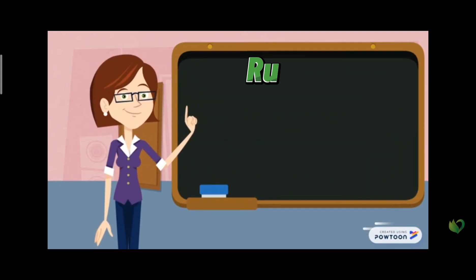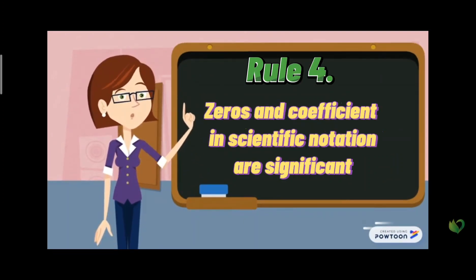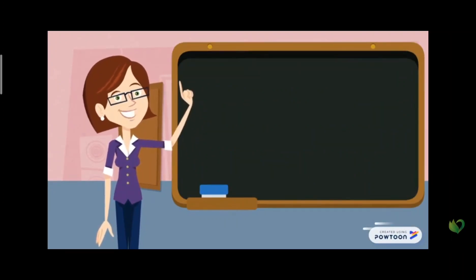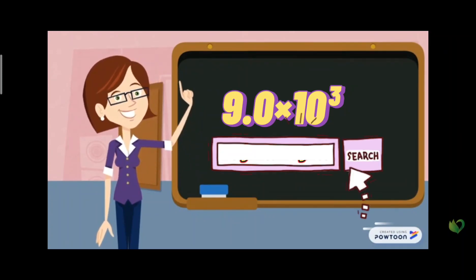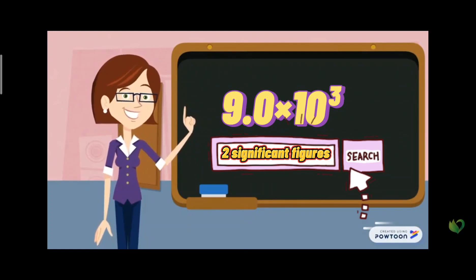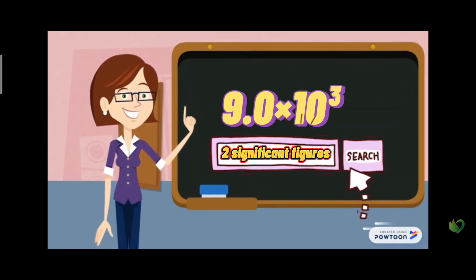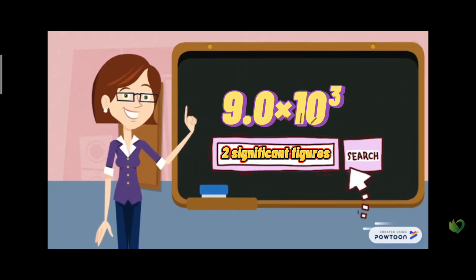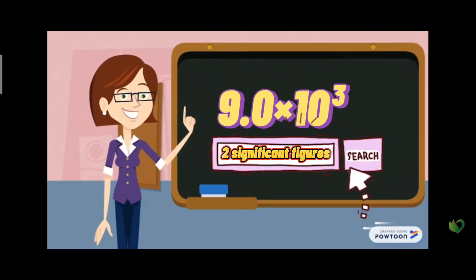Rule number four: zeros in the coefficient in scientific notation are significant. For example, 9.0 times 10 raised to the power of 3 has two significant figures. Notice we have scientific notation — something multiplied by ten to some power — and both the 9 and the 0 are significant.